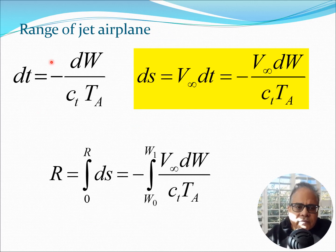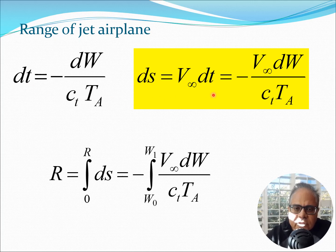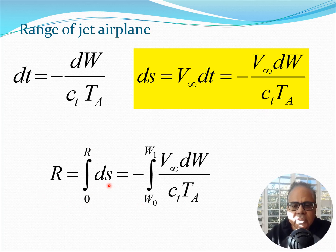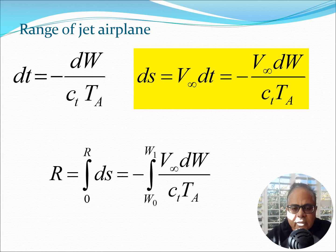To calculate range we take dt and multiply it by the aircraft velocity V∞, giving us ds — a small increment of distance covered in the time interval dt while flying at velocity V∞. Plugging in the expression for dt gives us ds in terms of V∞. Integrating from 0 to R gives the range integral: R equals negative integral from W0 to W1 of V∞ dW divided by CT·TA. This is the general expression for range.